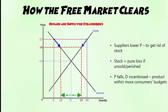What will happen is that suppliers will eventually see that they're not selling all of their stock sitting on shelves or in warehouses. Suppliers, being rational economic agents, will recognise that they've paid a cost to make this stock — in this case, strawberries. They've had labour costs to pick it, grow it, plant it, plus fertiliser and pesticide costs. If that stock goes unsold or rots, that's a pure loss for the suppliers.